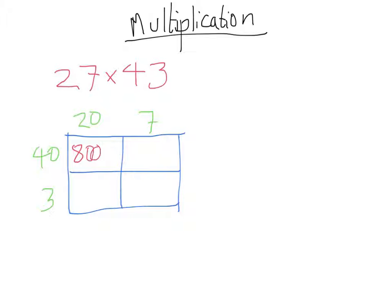For example, if you had to do 20 times 50, 2 times 5 is 10, but then you've still got to add on the two extra zeros to make a thousand. So just be careful, but in this case it's not a problem.